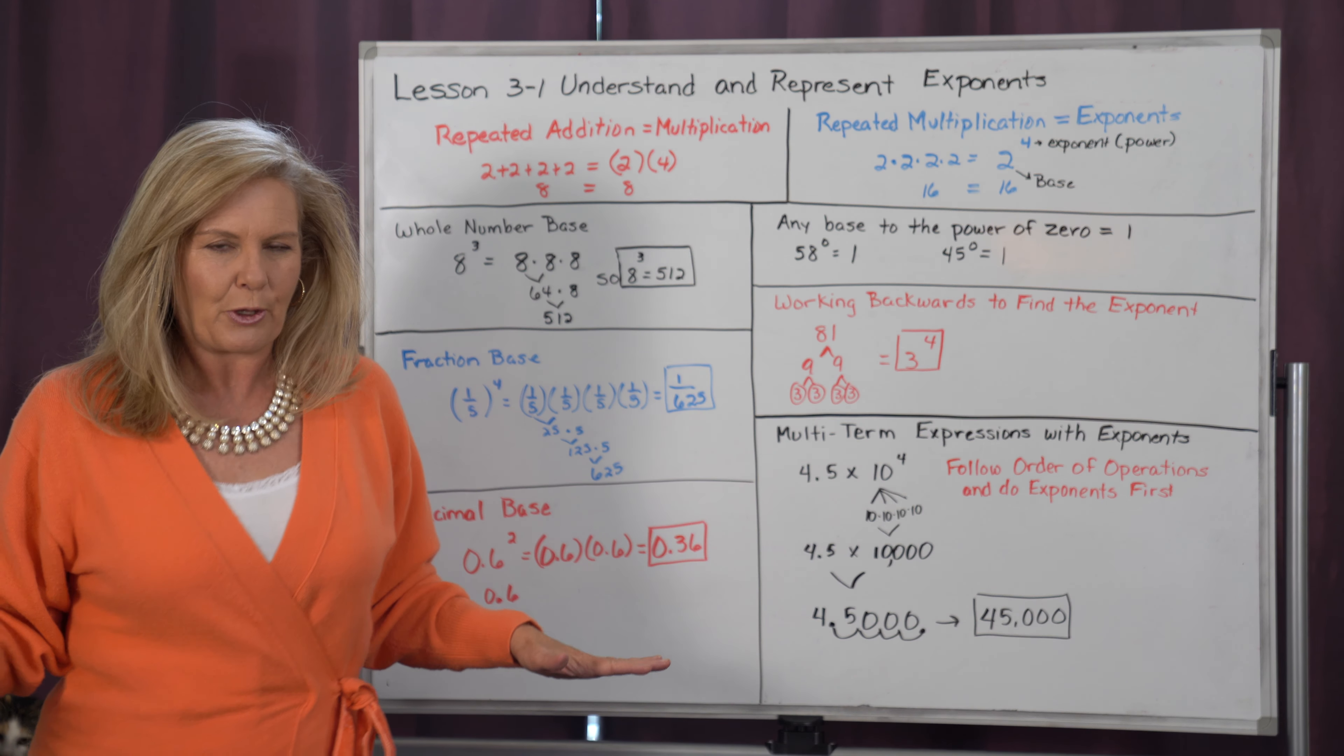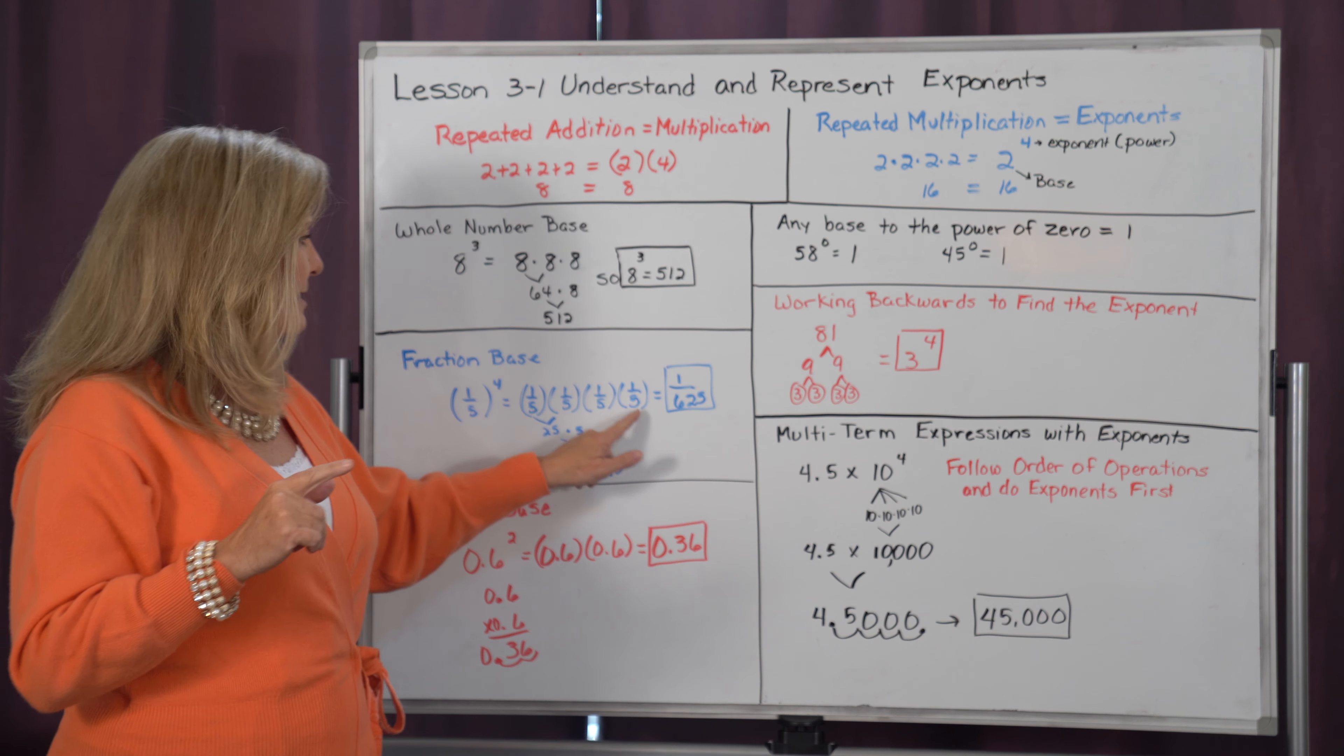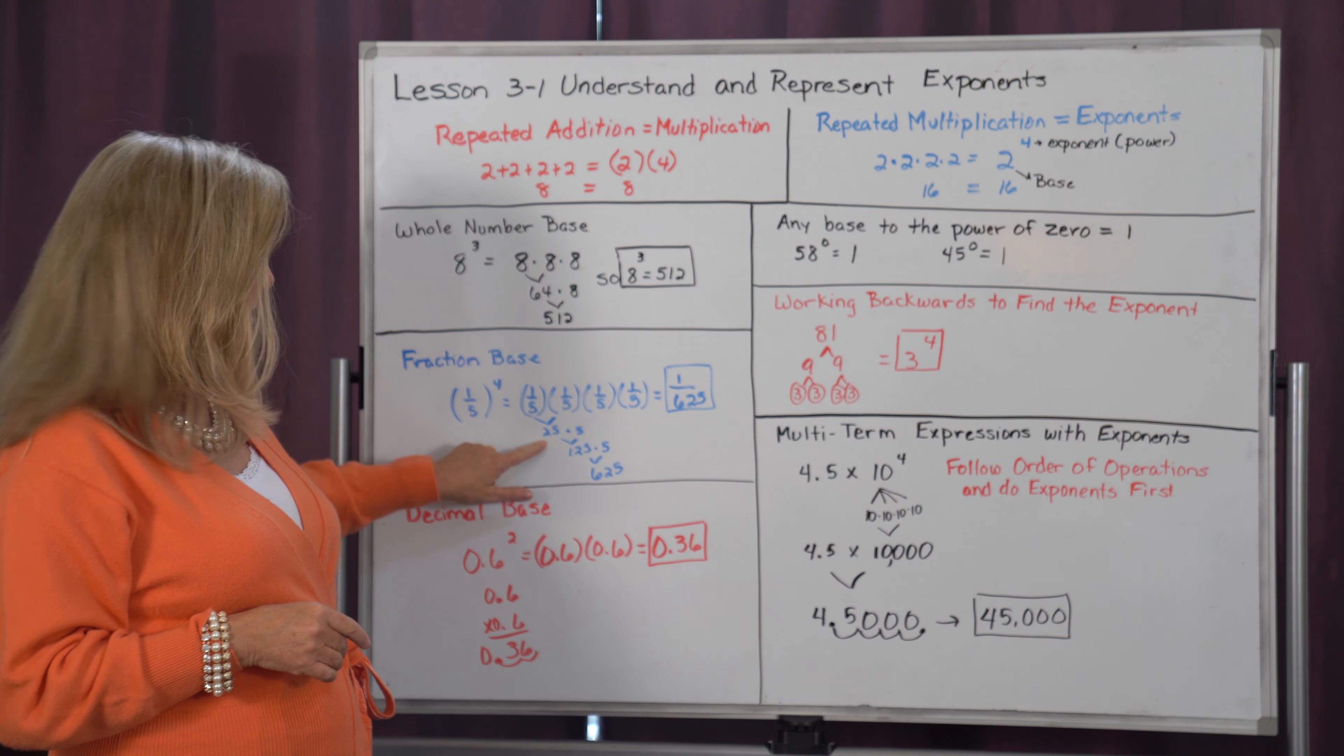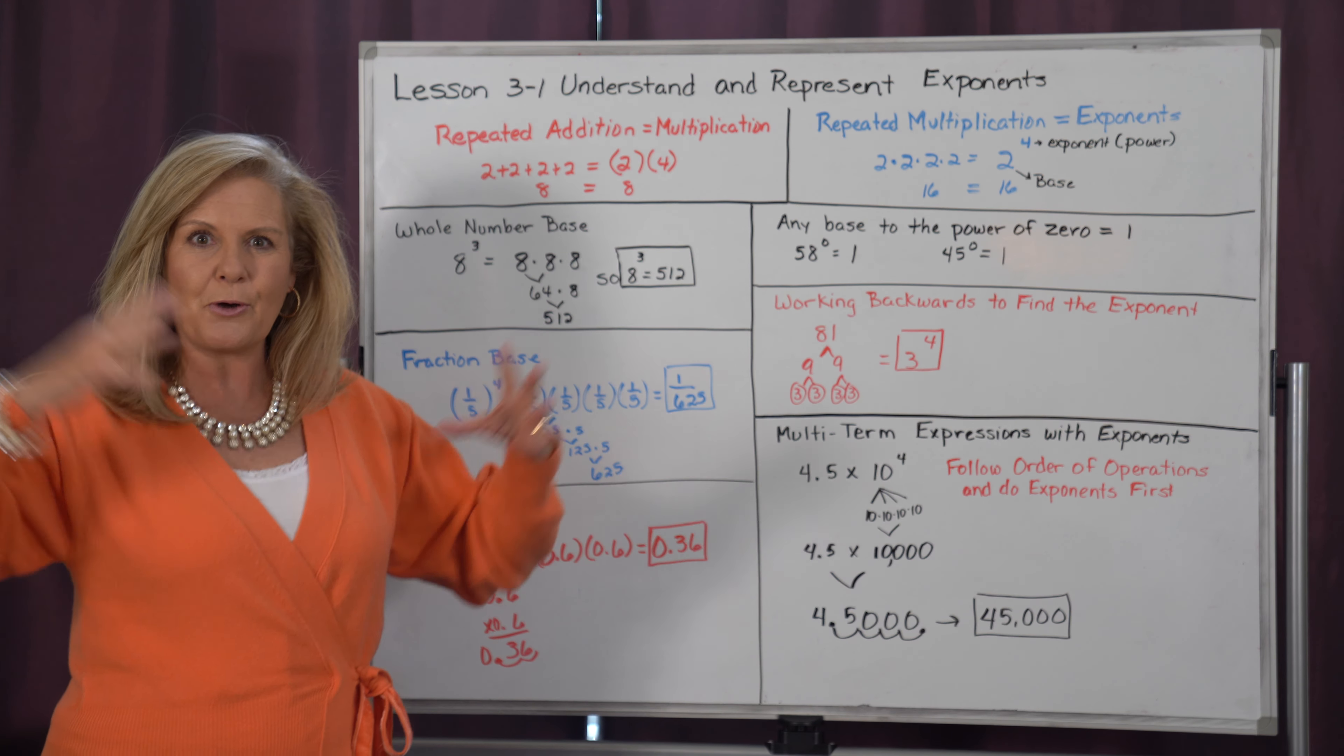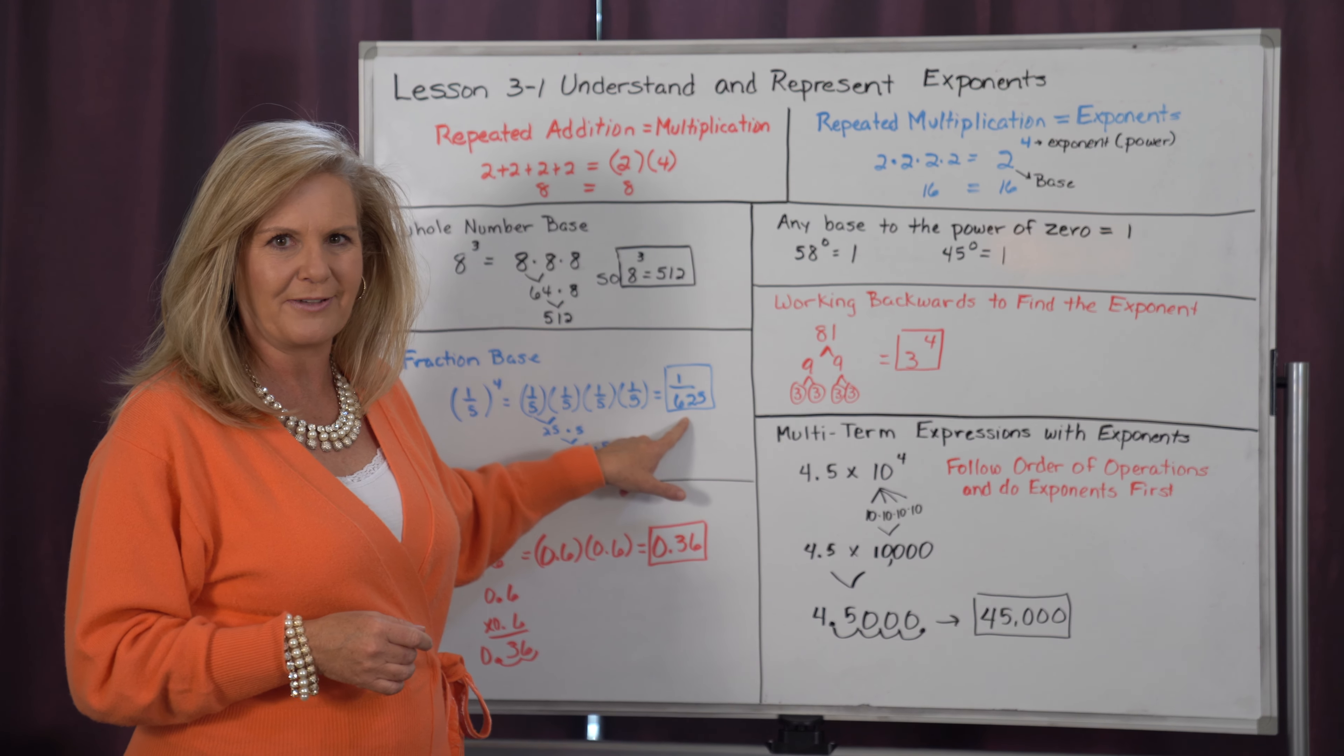But we don't have to just deal with whole numbers. We can also deal with fractions. So what if I had 1/5 to the 4th power? Well, it simply means 1/5 times 1/5 times 1/5 times 1/5. I'm going to break it down 2 at a time. So 1/5 times 1/5 is 1/25. And 1/25 times 1/5 is 1/125. And 1/125 times 1/5 is 1/625. Notice the size of that denominator. So if we go to put it together, 1/5 to the 4th power is 1/625.